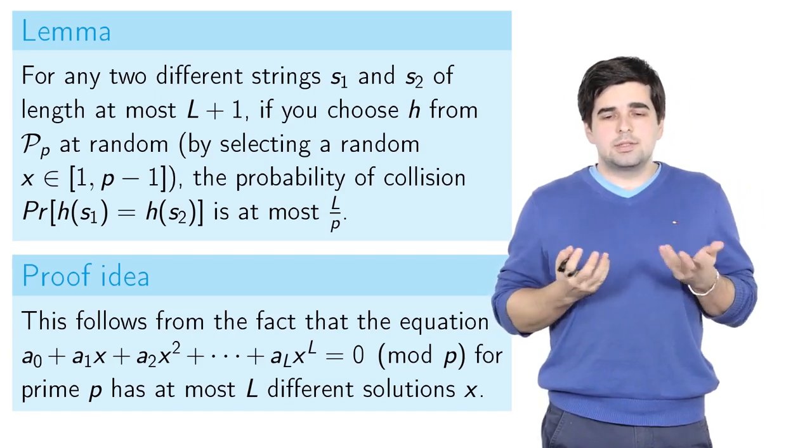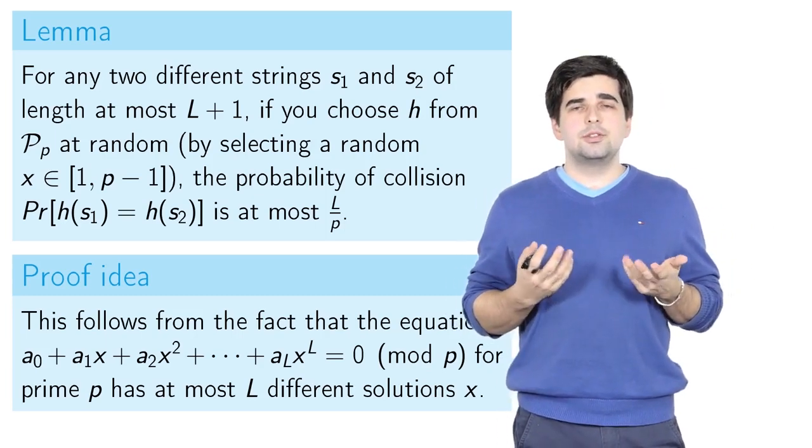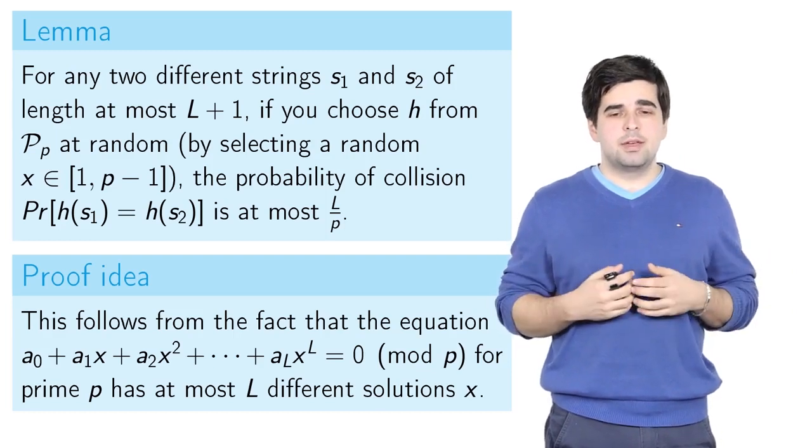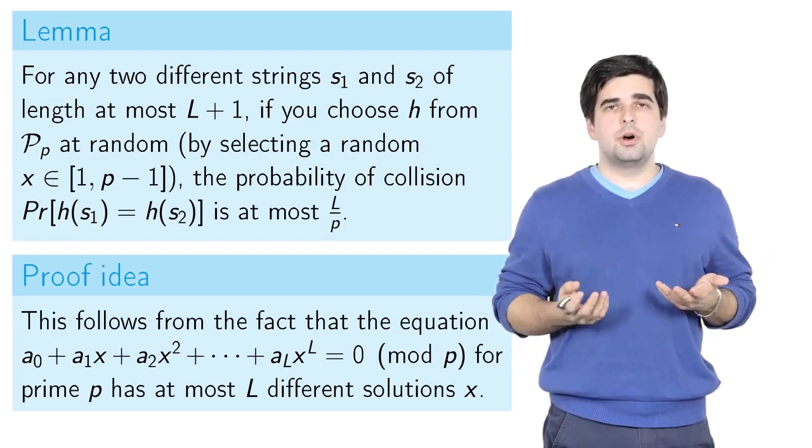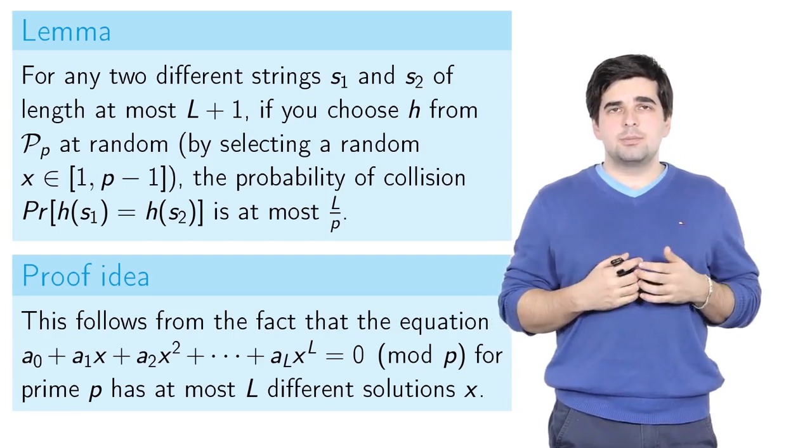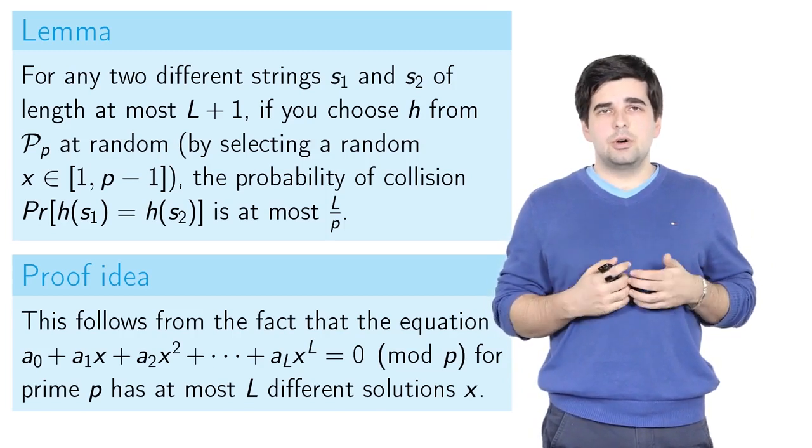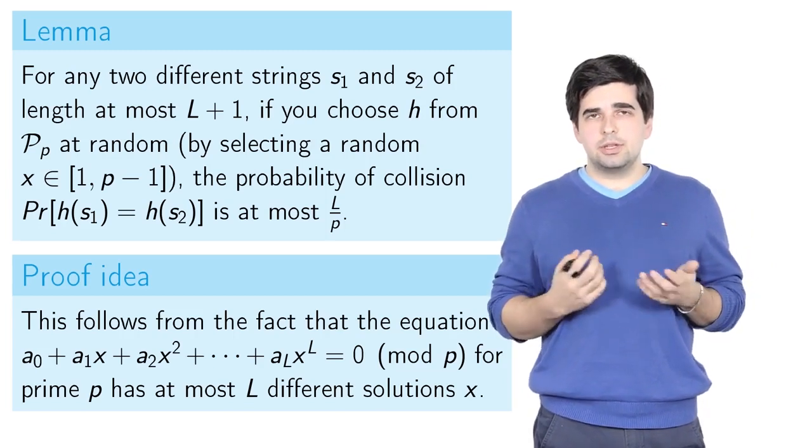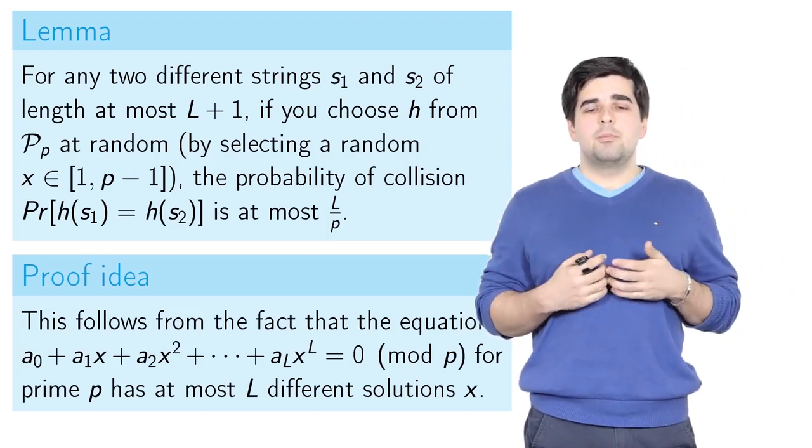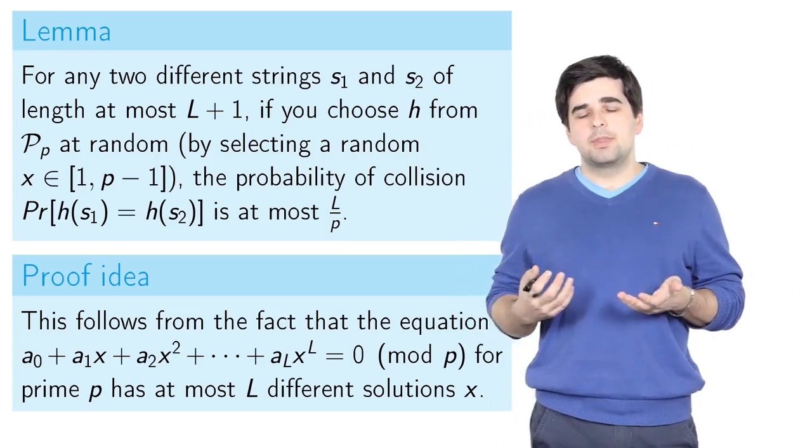That doesn't seem like a good estimate because L can be big, but actually it is your power to choose p. If you choose a very, very big prime number p, then L/p will be very small. Note that it won't influence the running time of the PolyHash procedure.